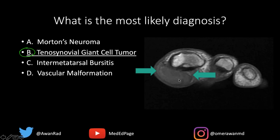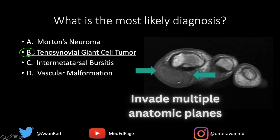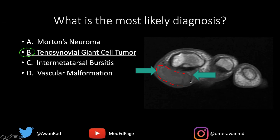Also, vascular malformations can invade different anatomic planes. This lesion is very well-defined and confined to a specific space, making a vascular malformation such as a hemangioma less likely.